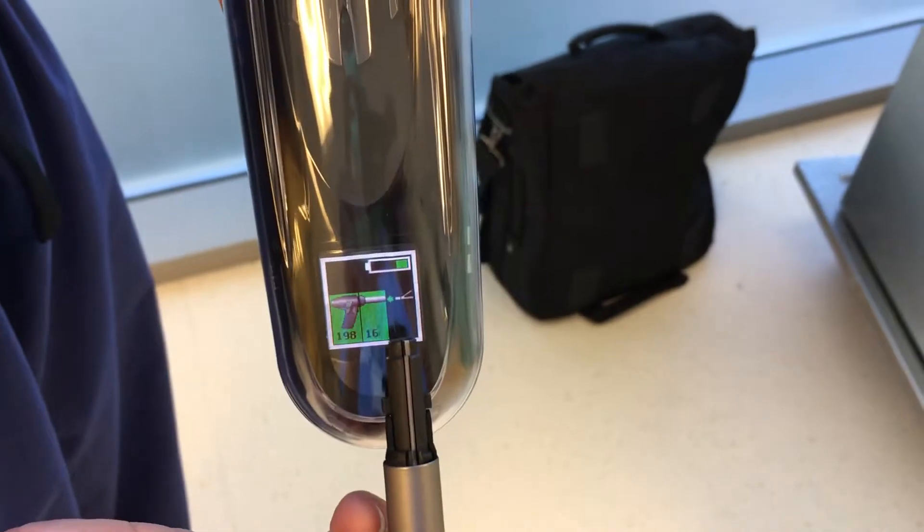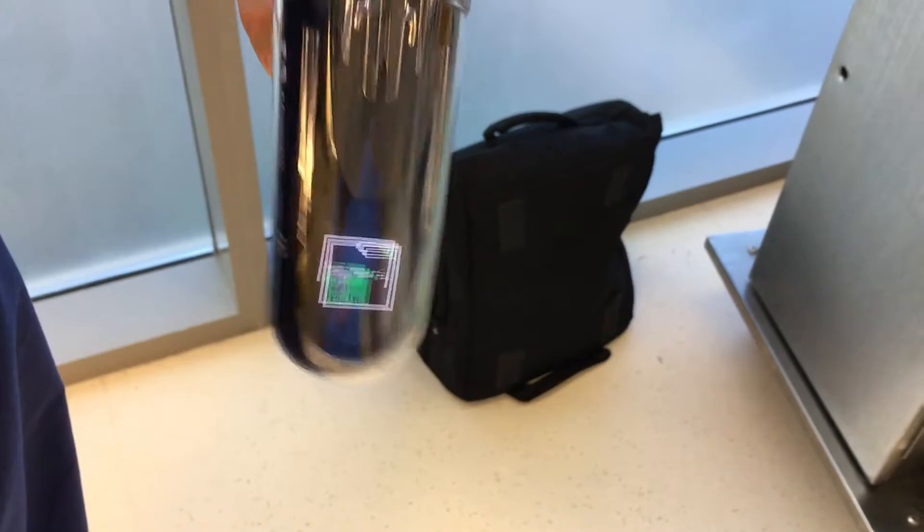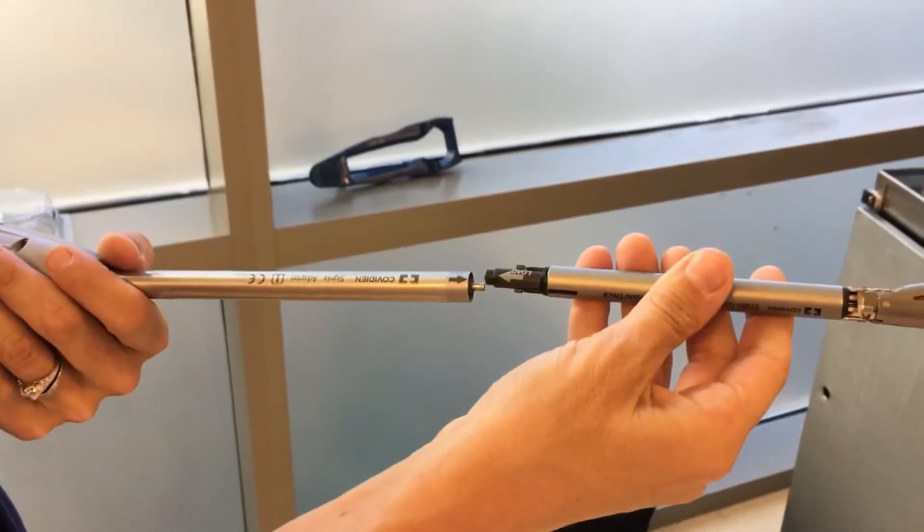The stapler on the LED screen is telling you to put a reload on, so if you need a second firing, you'll put the reload on just as if you were using the manual handle.